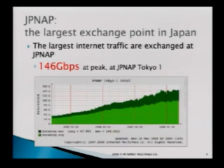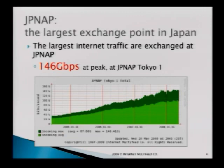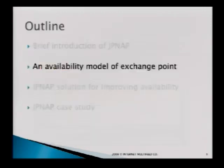JPNAP carries a lot of traffic and currently at the peak it's 146 Gbps. This is the fourth largest all over the world. The top three are AMS-IX, DE-CIX, and LINX — those are the three big guys — and next is JPNAP.